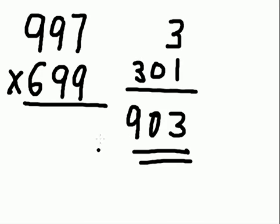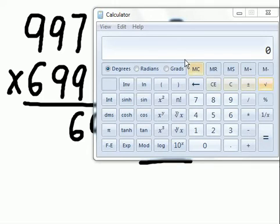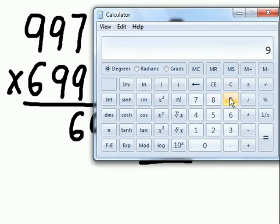Now let's get the first three digits. 699 minus 3 is how much? Well, it's a no-brainer: 696. Is that our answer? Let's find out. 997 times 699...